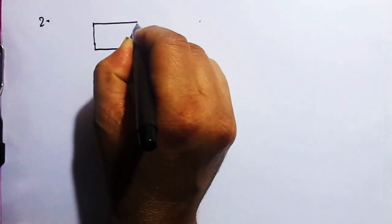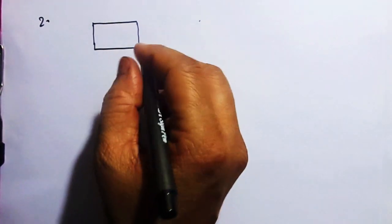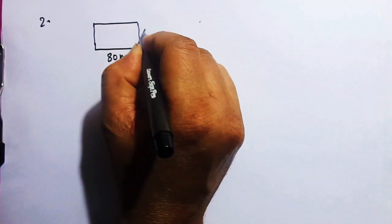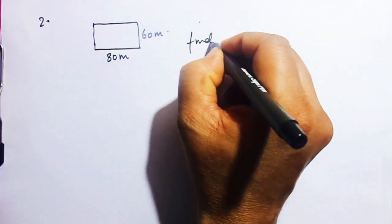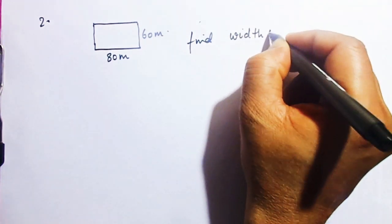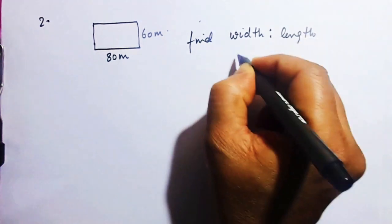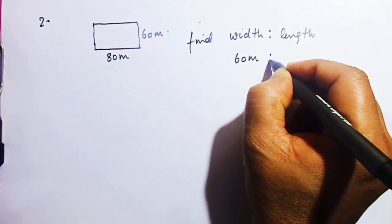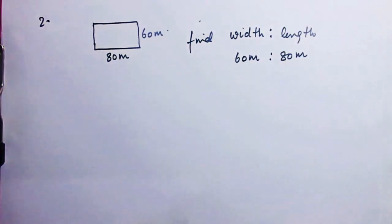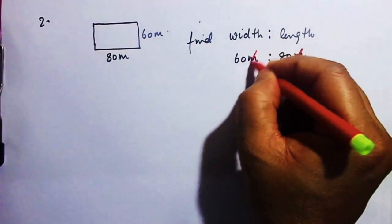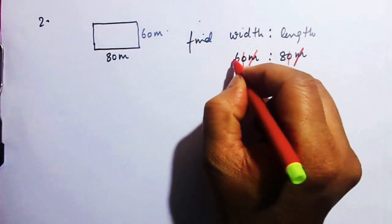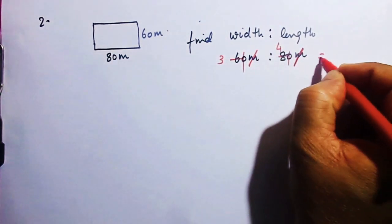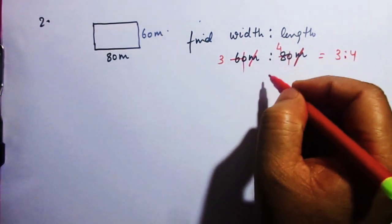Number 2: A rectangular field has length = 80 meters and breadth = 60 meters. Find the ratio of width to length. Width is 60 m, length is 80 m. Cancel the meter units. Then cancel the zeros, and divide by 2: 3 times and 4 times. Answer is 3 is to 4.